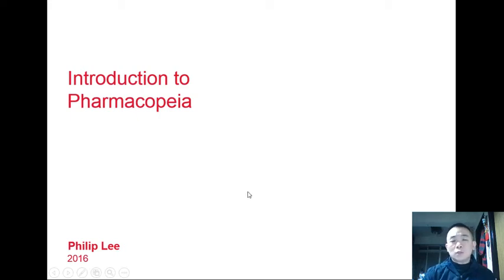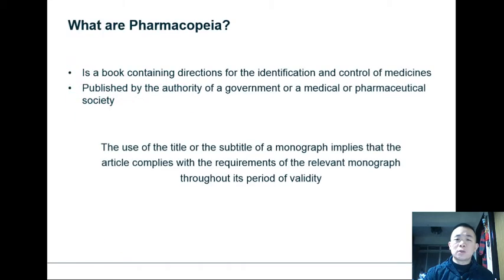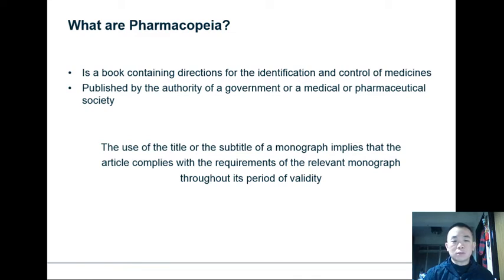Hello everyone, my name is Philip and today I'm going to talk about pharmacopoeias. To start things off, let us define what pharmacopoeias are. Basically they're books that contain directions for the identification and control of medicines, and they're usually published by the authority of a government or a medical or pharmaceutical society.